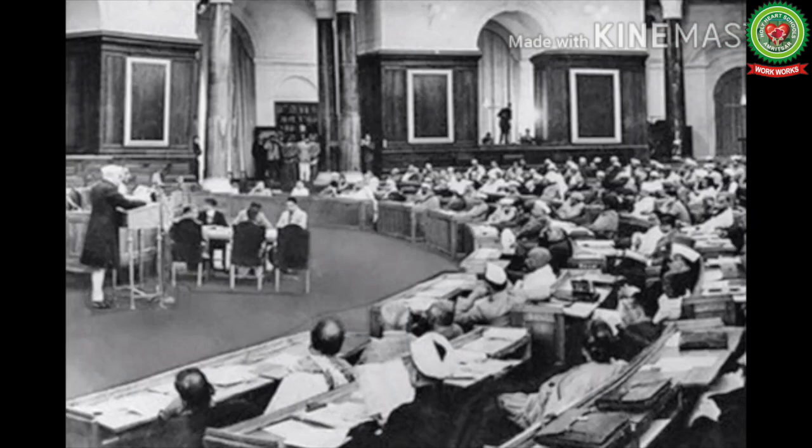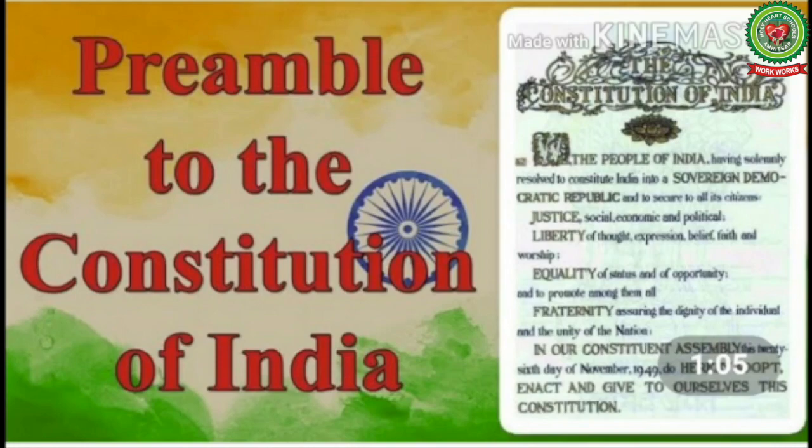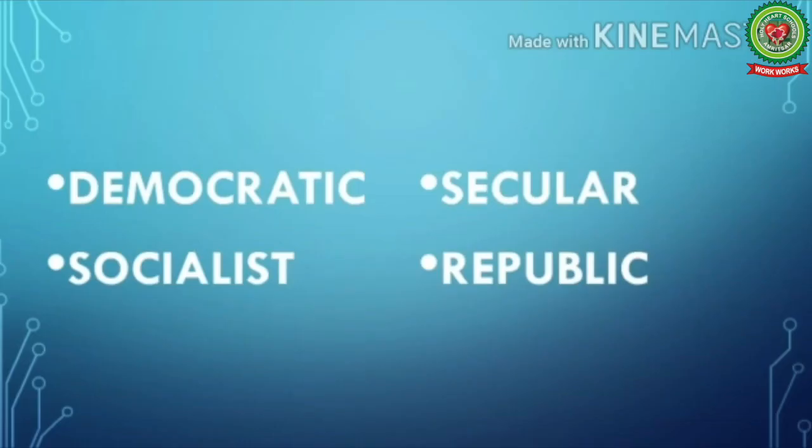The preamble is drafted by Pandit Jawaharlal Nehru and adopted by the Constituent Assembly. Constituent assembly means a body or assembly of elected members assembled for the purpose of drafting the constitution. To understand the preamble better, let us know the certain terms used in it: democratic, socialist, secular, and republic.